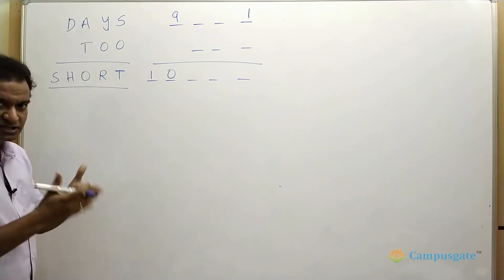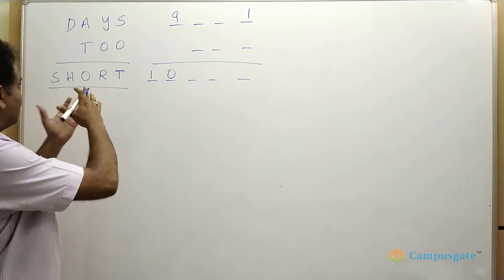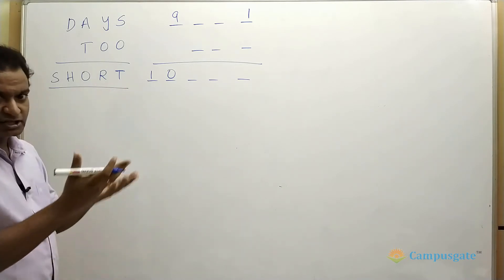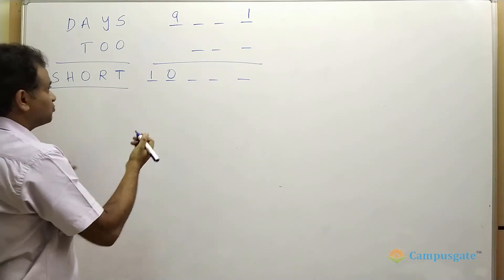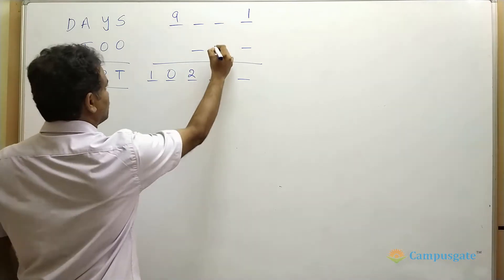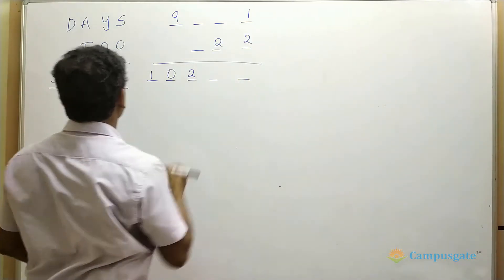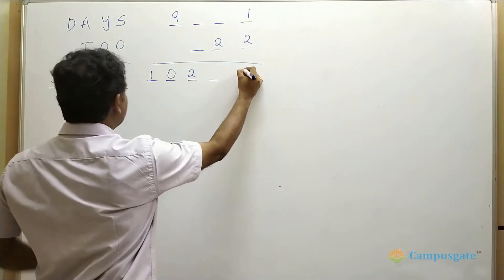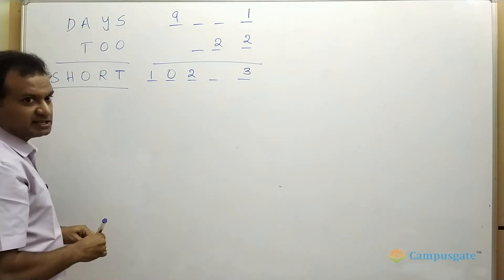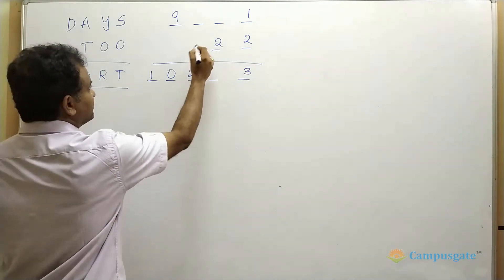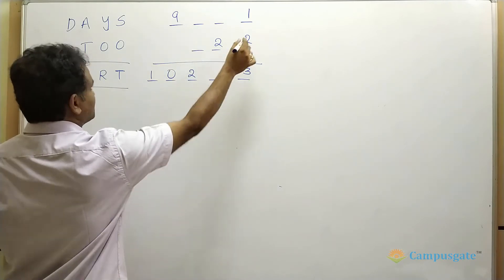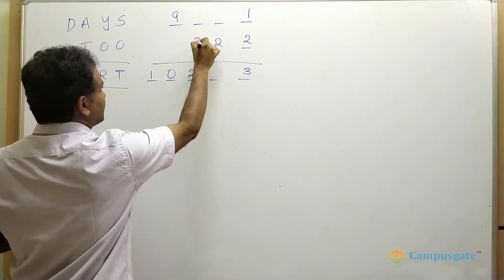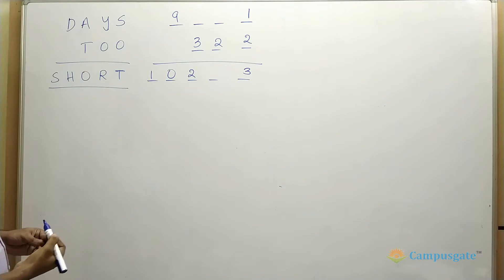So we have to take some chance and check whether O really fits for 2 or not. So let us put O equal to 2. If you put O equal to 2 here, then immediately we can derive the value of T. So this is an interesting thing here. So very rarely this occurs. So if you just put O equal to 2, immediately you are getting the value of T equal to 3.